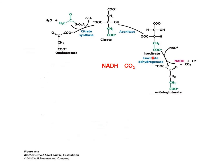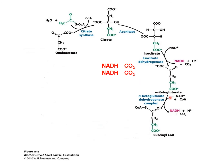A similar reaction happens in the next step, where you also have the oxidative decarboxylation of alpha-ketoglutarate to form the 4-carbon succinyl coenzyme A. In this process, you have the production of 1 NADH and 1 carbon dioxide, but at the same time you also have the addition of 1 coenzyme A, as the energy released from this reaction is large enough to recruit another thioester group. This reaction is catalyzed by the enzyme alpha-ketoglutarate dehydrogenase complex.